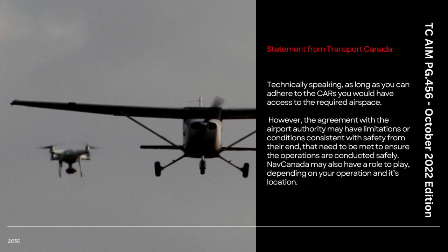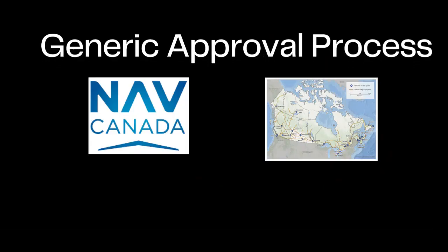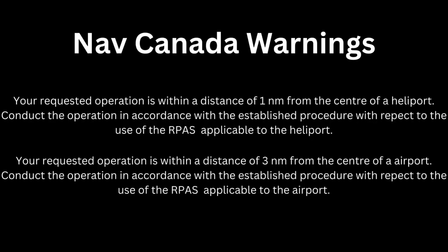From a statement from Transport Canada, they state: technically speaking, as long as you can adhere to the CARS you would have access to the required airspace; however, the agreement with the airport authority may have limitations or conditions consistent with safety that need to be met to ensure their operations are conducted safely. Nav Canada may also have a role to play depending on your operation and its location. Nav Canada and airport operators work hand-in-hand to establish safety procedures that affect their aerodromes or airports, so it is always important to conduct your research before you fly.